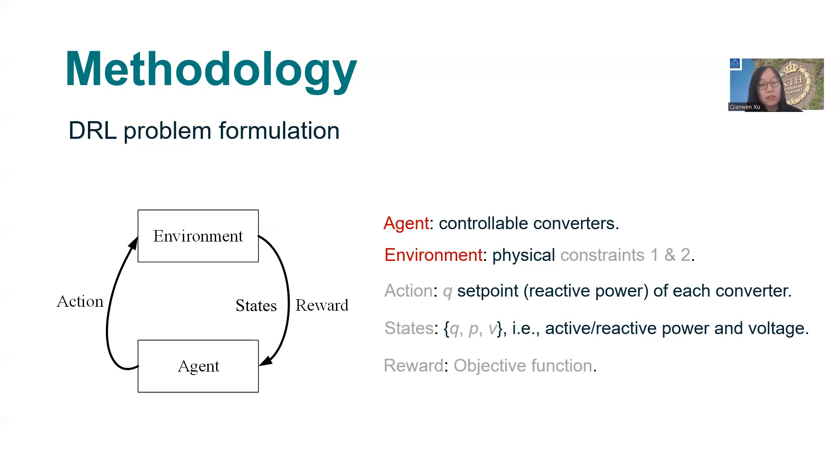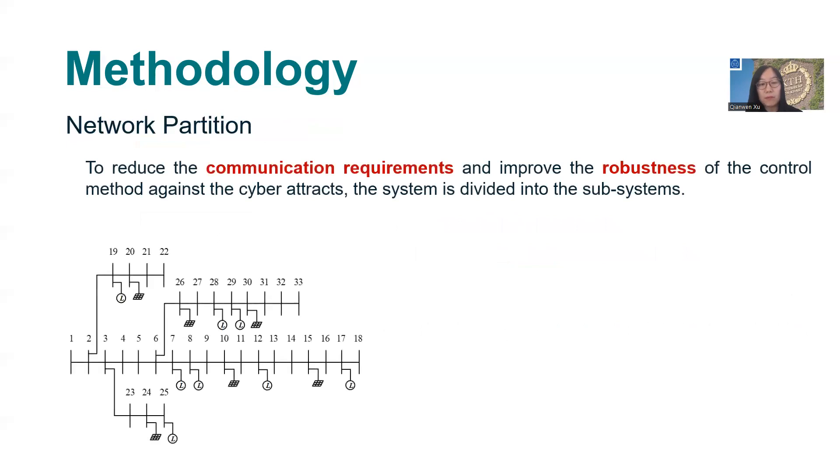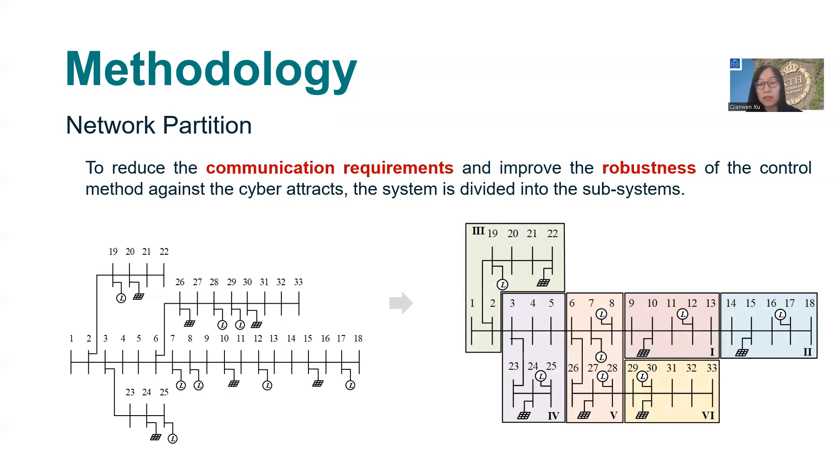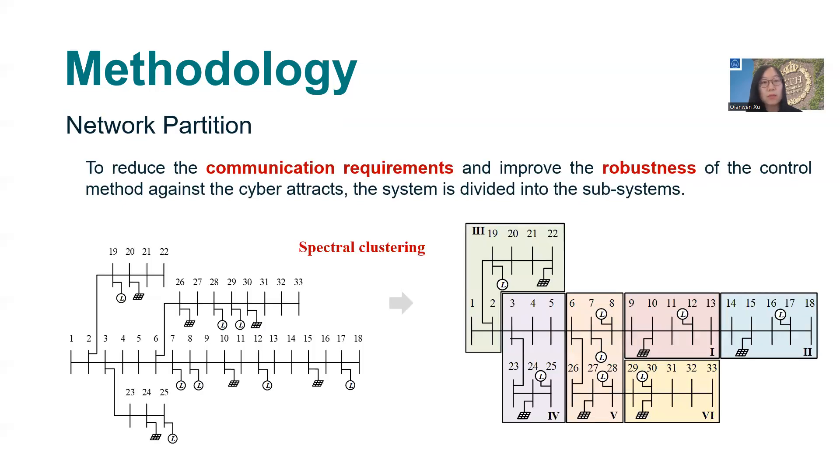Then we further develop a communication-efficient deep reinforcement learning algorithm. We divide a large-scale power grid into subsystems to reduce the communication requirements and improve the robustness of the control methods against possible cyber-attacks. For example, a modified IEEE 33-bus system like this can be divided into six subsystems based on the parameters and the spectral clustering method.